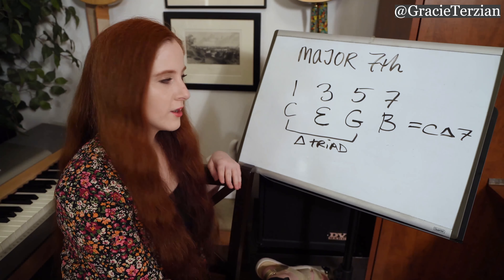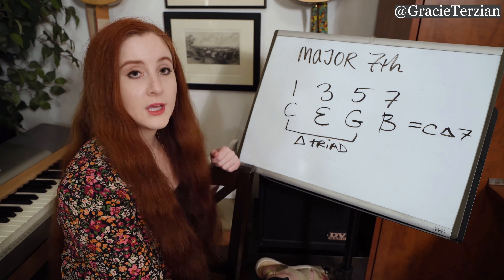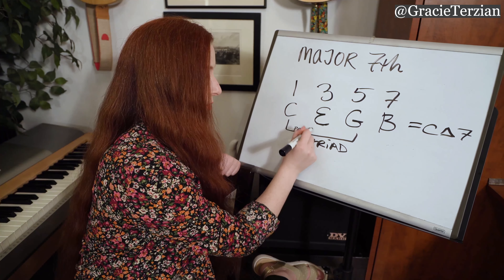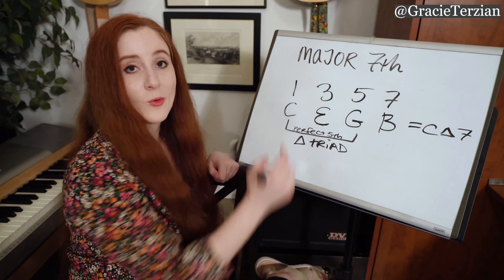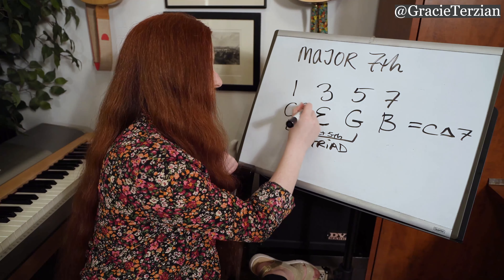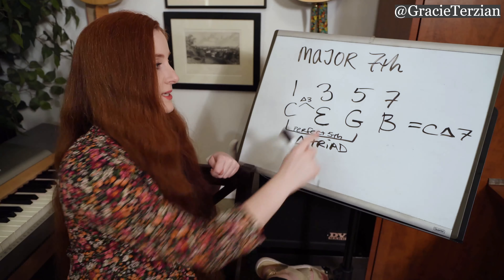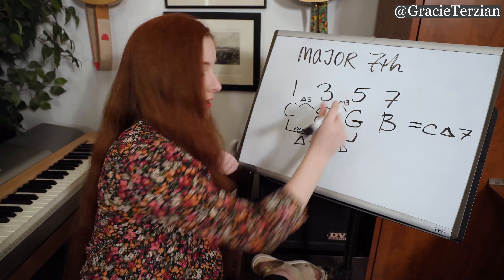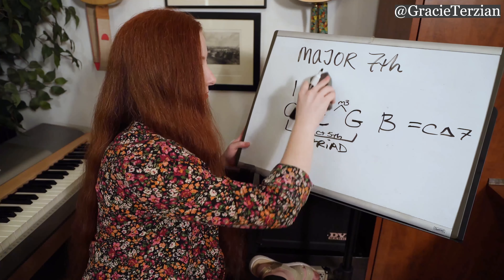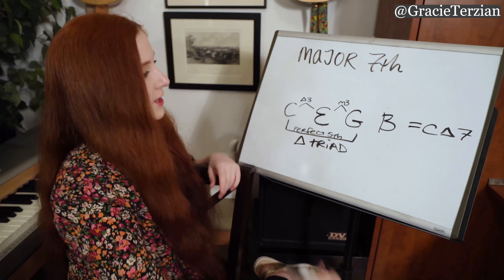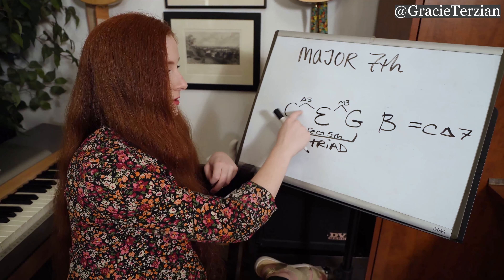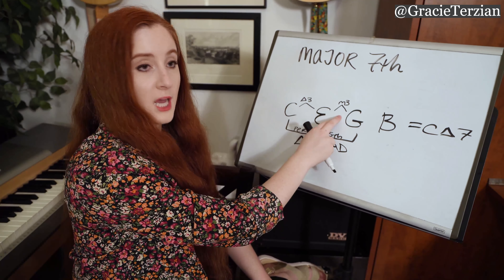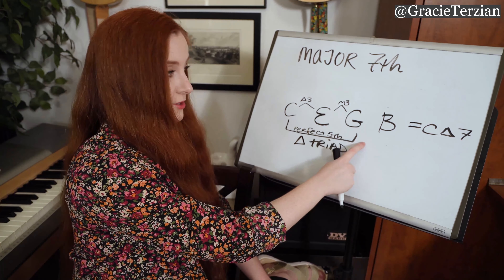Let's think about what the intervals are within a major triad. From C to G, we have a perfect fifth. From C to E, we have a major third. And then from E to G, that is a minor third. So we have a perfect fifth from C to G, a major third interval, and then a minor third interval. Every single major triad is built this way — with a major third and then a minor third on top, and the distance between the root and the last note is a perfect fifth.